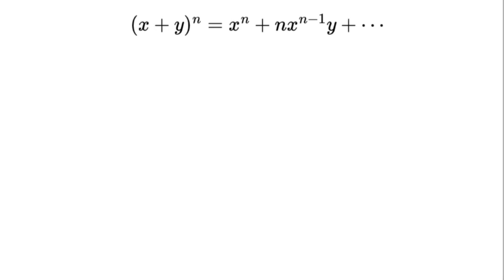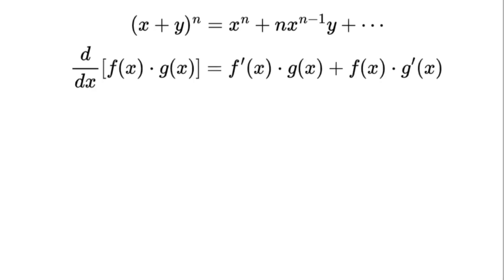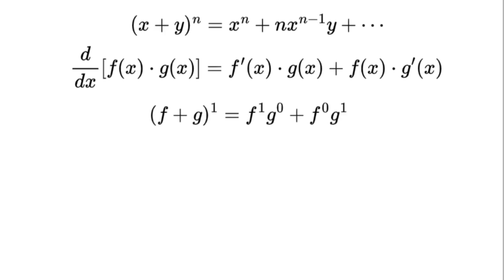Let's kick things off with derivatives. You've seen the product rule: the derivative of f(x) times g(x) is f prime times g plus f times g prime. Can our binomial idea recreate this? Take n equals 1: f plus g to the power of 1 equals f to the power of 1 times g to the power of 0 plus f to the power of 0 times g to the power of 1.